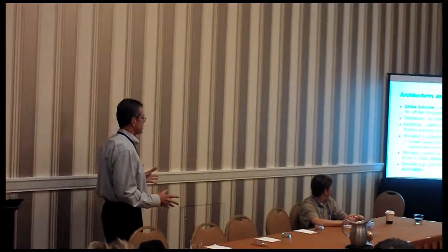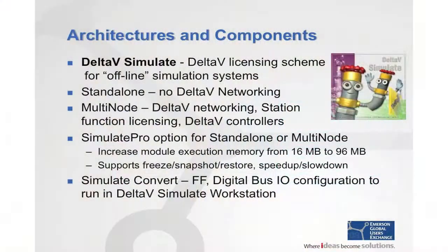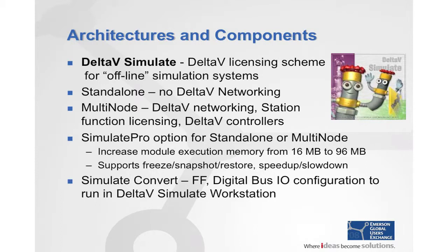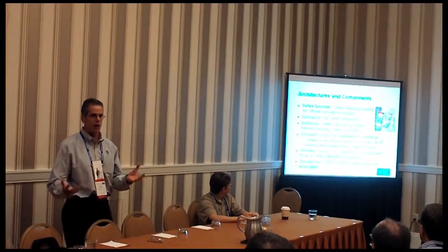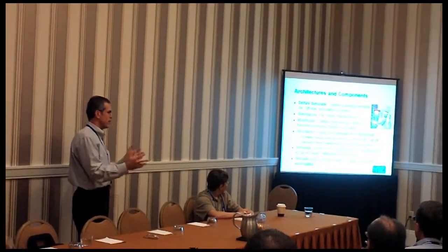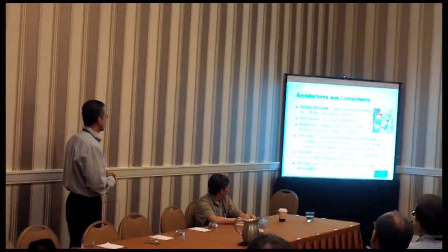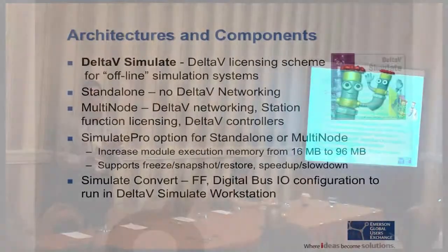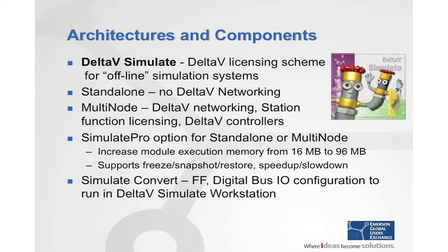Now let's talk about the components of your simulation system. Delta-V has fantastic abilities for offline systems with the Delta-V Simulate product line. Delta-V Simulate is essentially a Delta-V licensing scheme that allows you to build an offline simulation system without incurring the complete license package of a standard Delta-V system. There are two product families: Delta-V Simulate Standalone, which has no Delta-V networking — essentially everything is in one PC — and it does have Microsoft networking functionality.